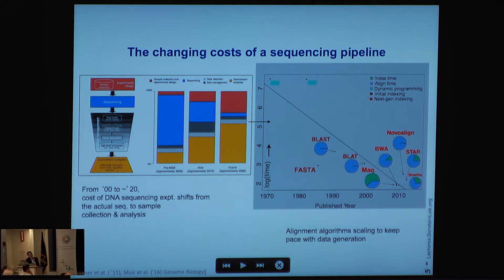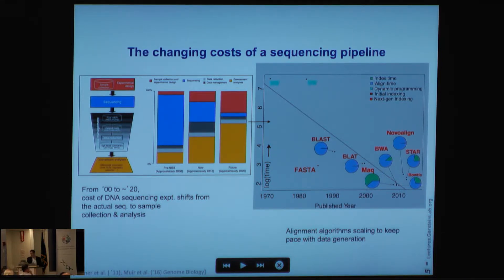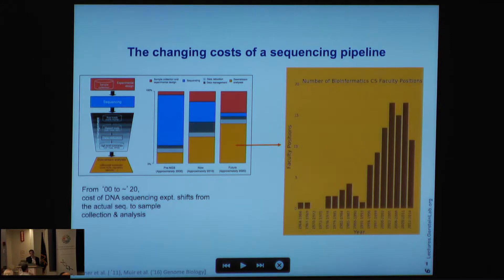You can see the early algorithms using dynamic programming, then next-gen algorithms such as BLAST that use hashing, and then modern algorithms such as MAQ or BWA that use sophisticated techniques like the Burrows-Wheeler transform — again showing very nice exponential scaling. Of course, the thing that is not exponentially scaling is the big downstream analysis component, which is completely open-ended. It's very important, but we just don't know how to scale it.